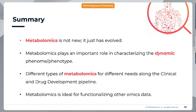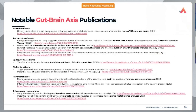To finish: metabolomics is not new, but it has evolved considerably over the last 20 to 23 years. Metabolomics plays a very important role in characterizing the dynamic phenotype and is quite crucial across the clinical pipeline to inform clinical and drug development processes. Metabolomics is also ideal for functionalizing other omics data — on its own it is very informative, but it really hones in on biological insights when combined with other omics. Some recent publications in this gut-brain axis space are available and we'd be happy to share them.